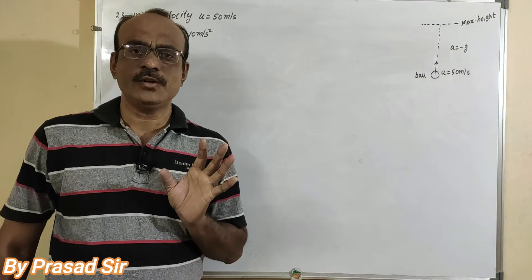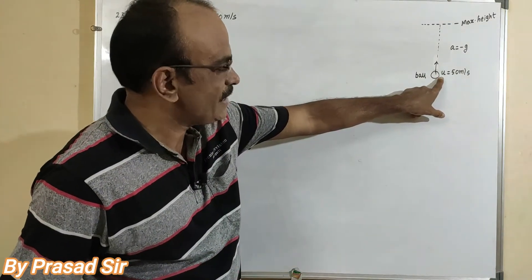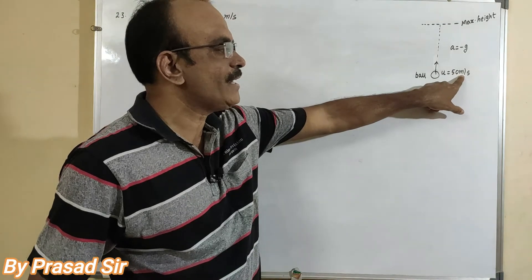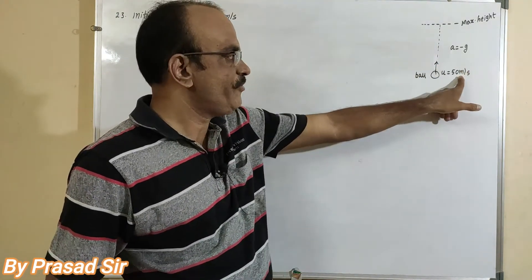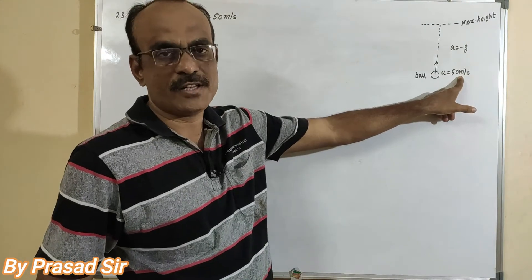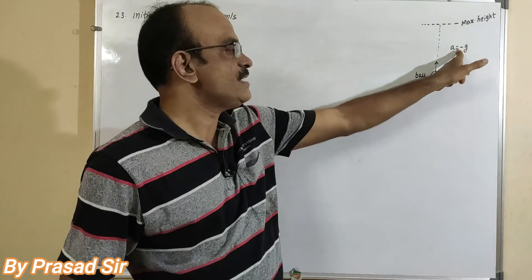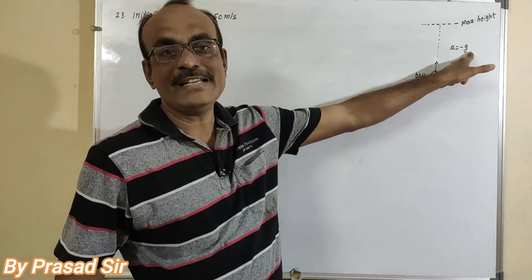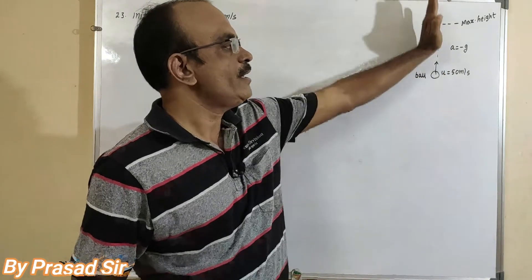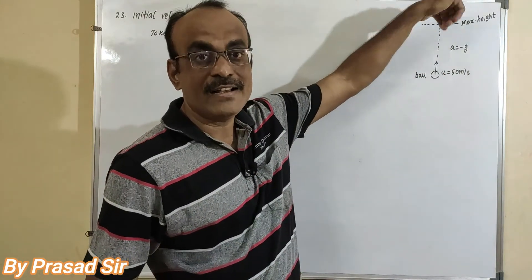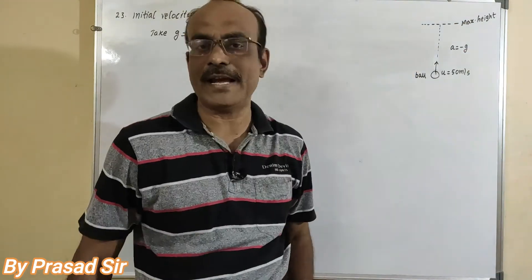In this question, what is given? A ball with initial velocity 50 meters per second projected in the upward direction. When the body is moving in the upward direction, acceleration becomes minus g, that is negative. Why? Because the body is moving in the upward direction while gravity acts in the downward direction. That is why acceleration is taken as minus g.